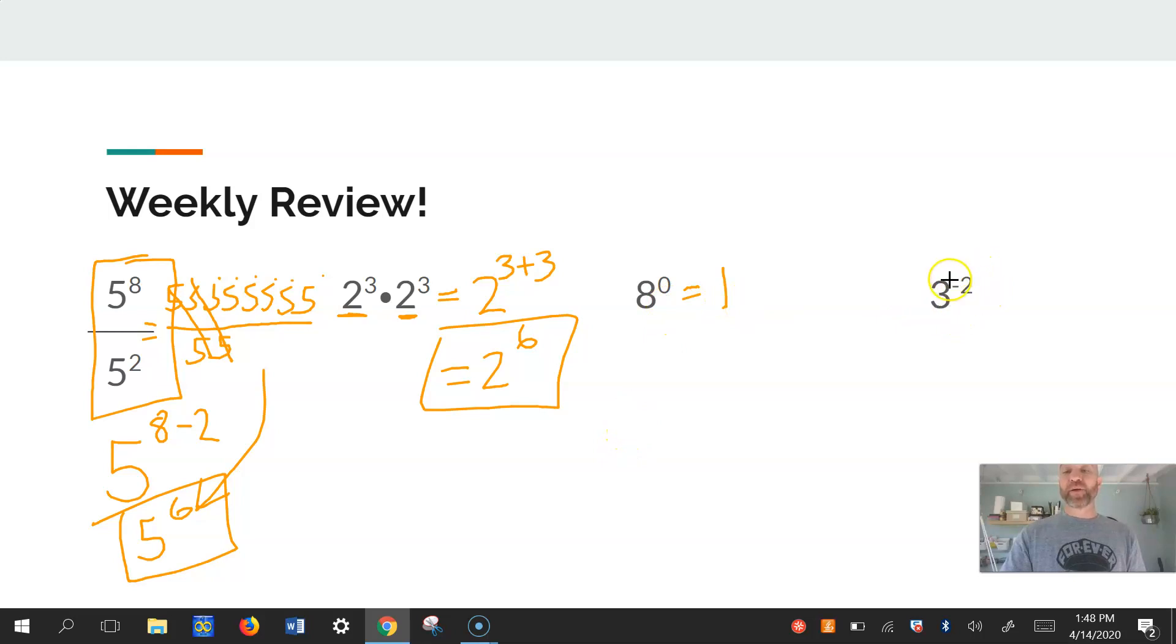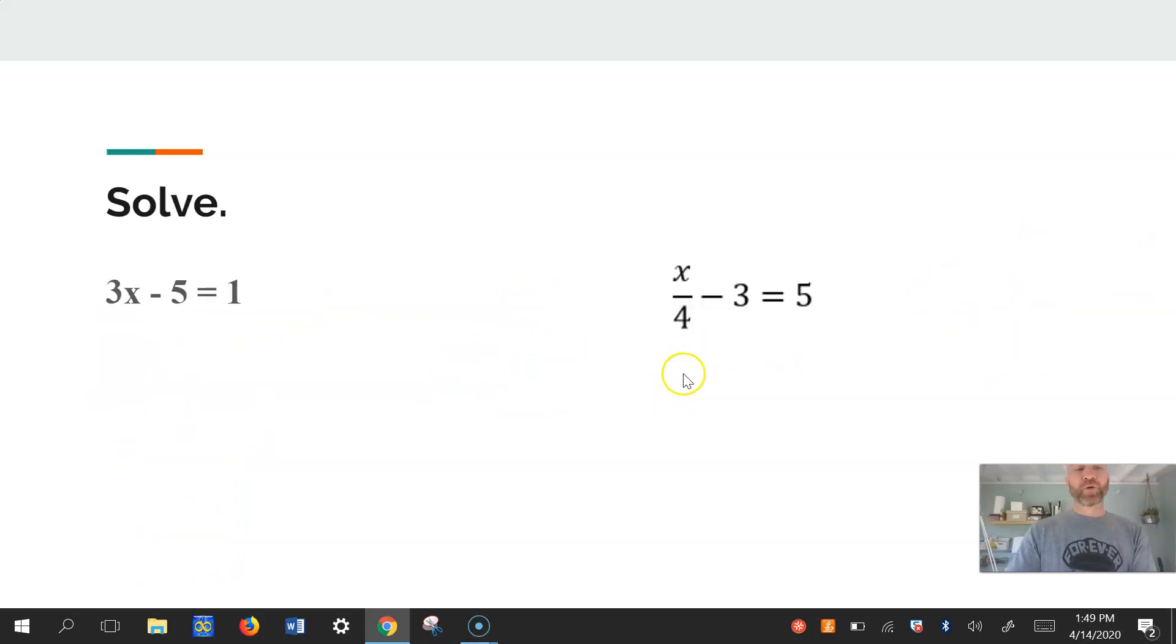Tricky one here. 3 to the negative 2. Anything to a negative power, if it's a whole number, we turn into a fraction. And what do we put on the bottom? We put this on the bottom, except what changes? Yep. It's just this. And if you change that to be 1 ninth, that's okay as well. Either one of these would be an excellent answer. Cool? Cool.